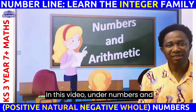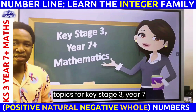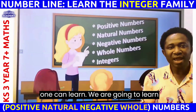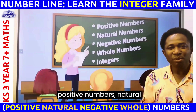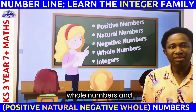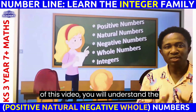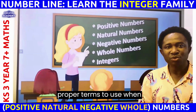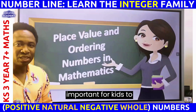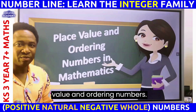In this video, under numbers and arithmetic, which is one of the first topics for Key Stage 3 Year 7 plus mathematics that anyone can learn, we are going to learn how to identify positive numbers, natural numbers, negative numbers, whole numbers, and integers. At the end of this video, you will understand the proper terms to use when identifying these numbers. This topic is important for kids to understand before they learn place value and ordering numbers.